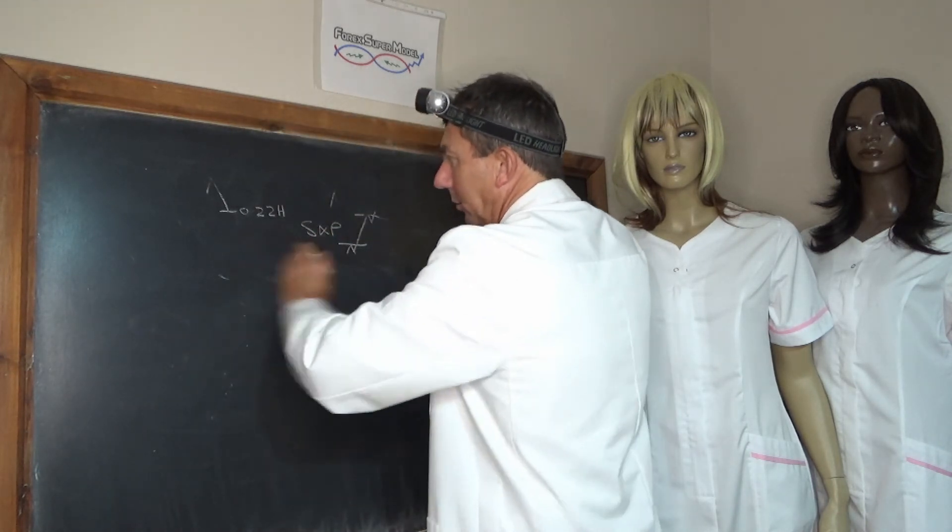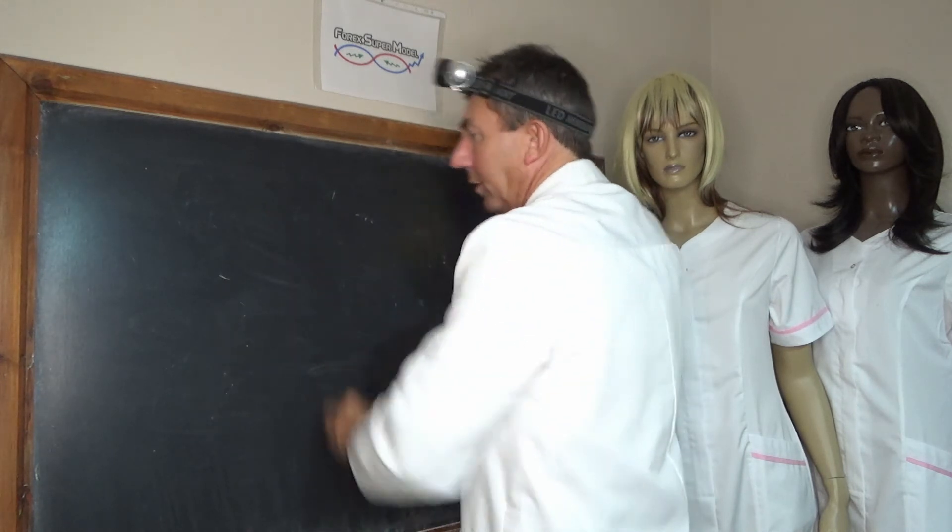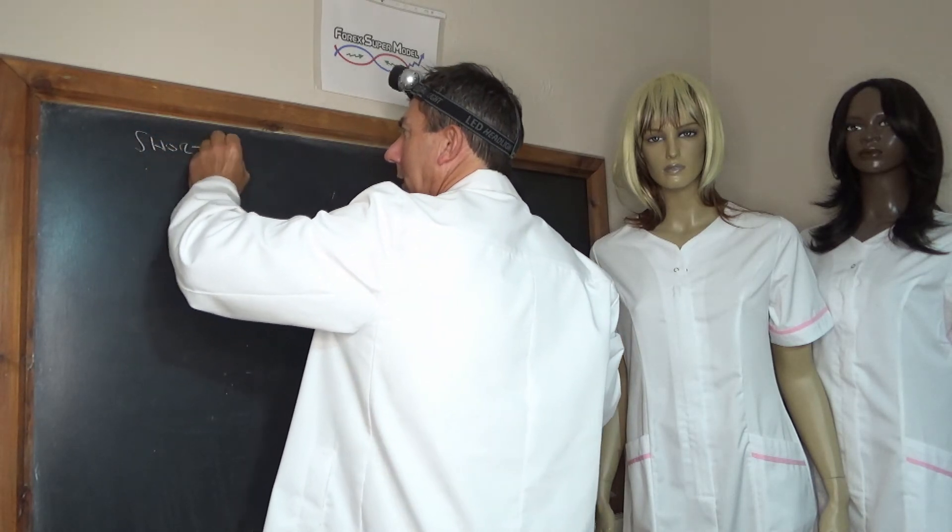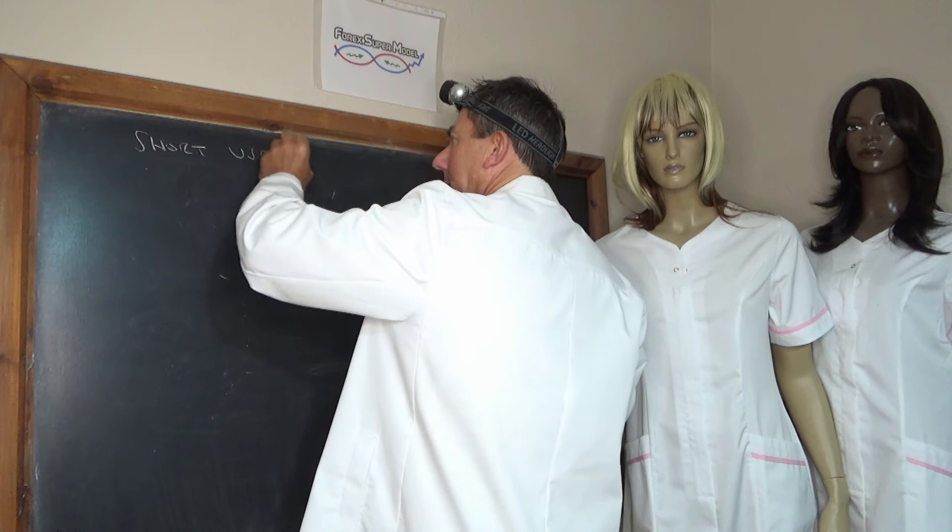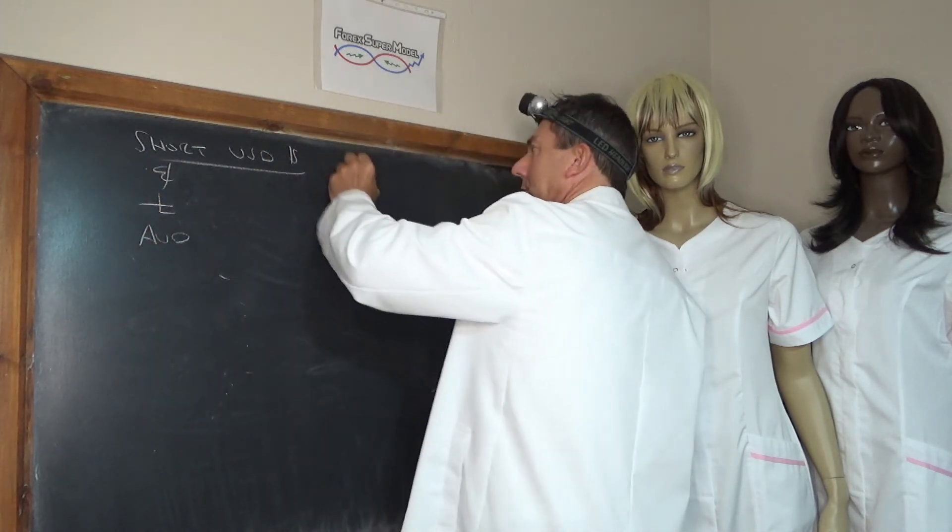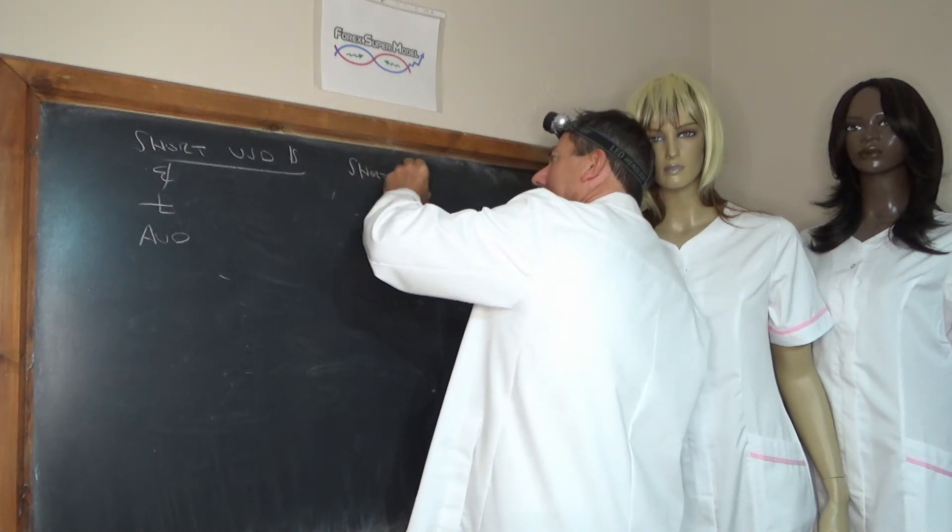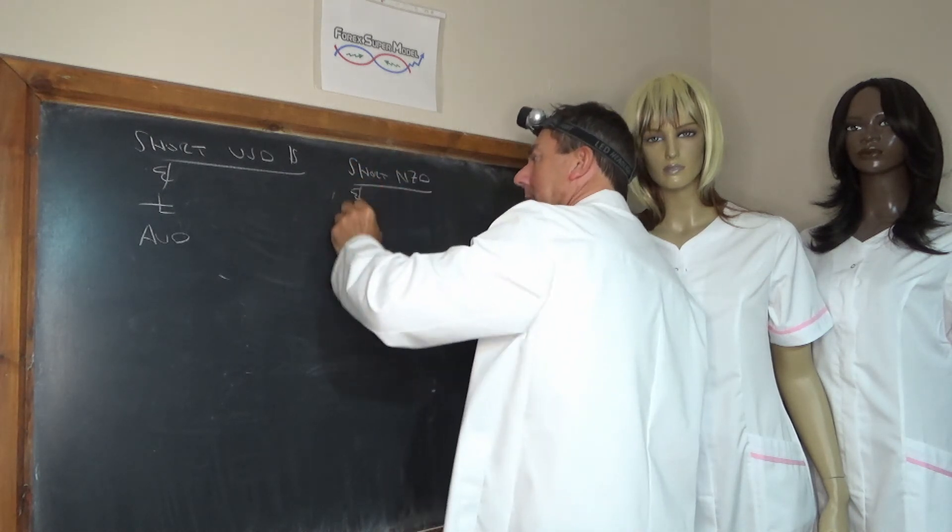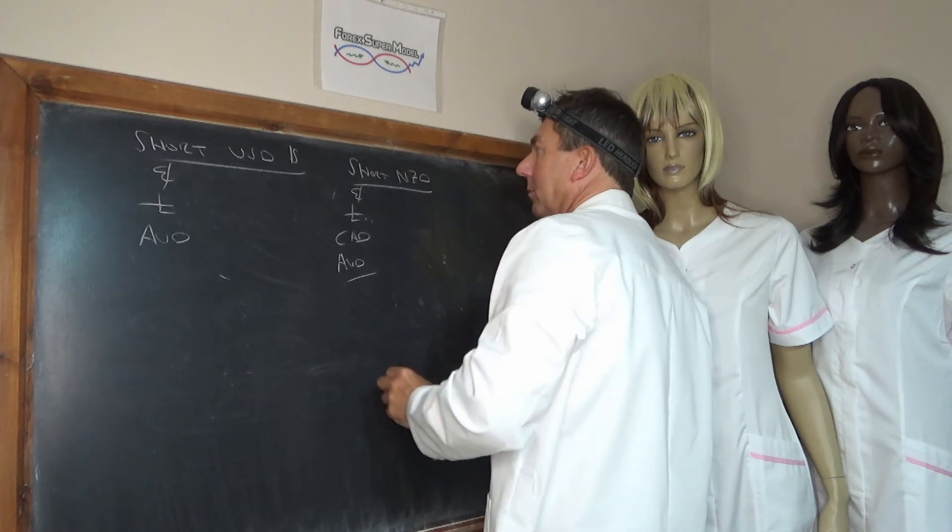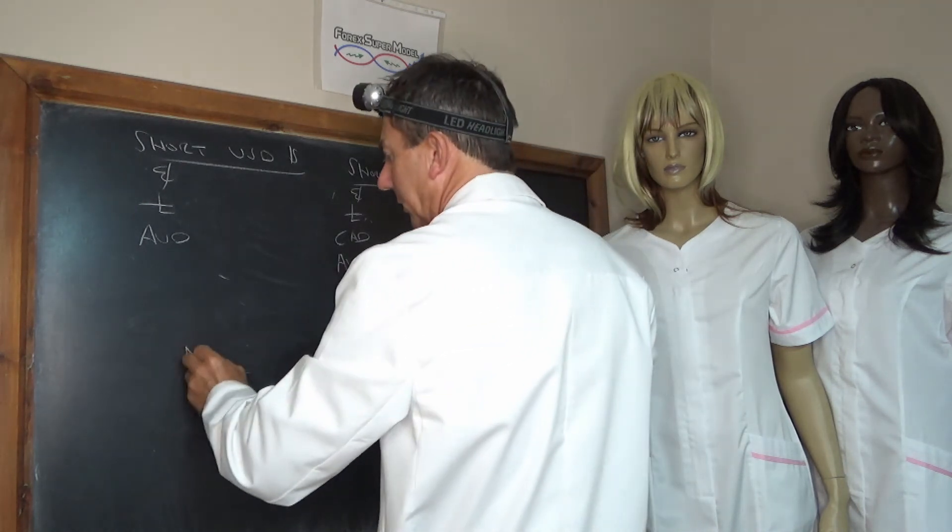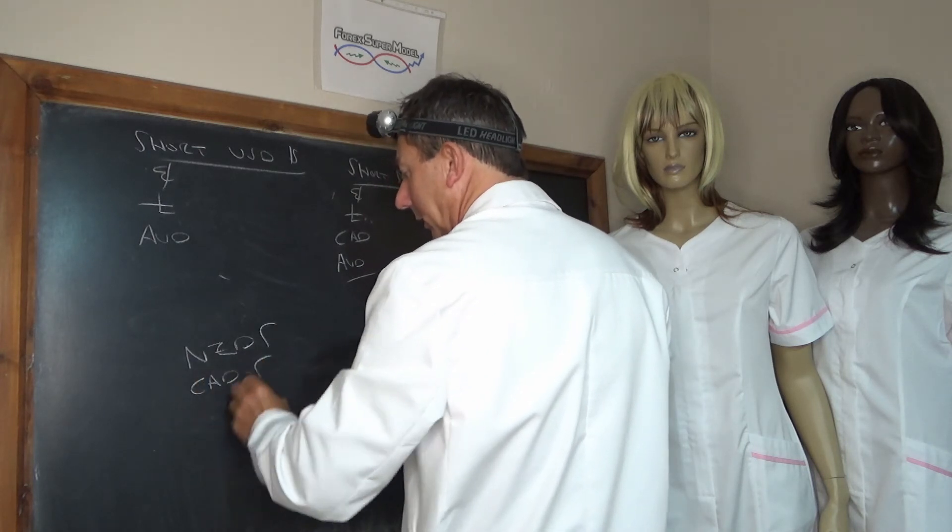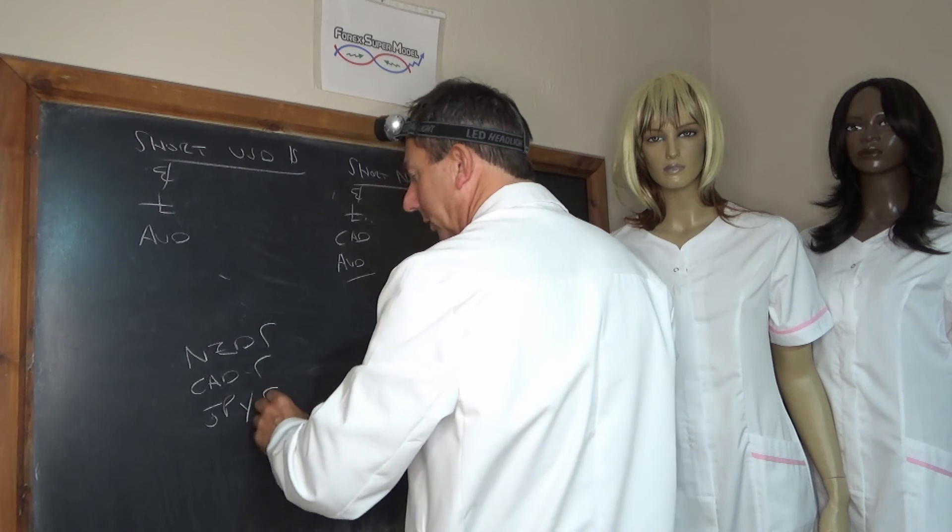So we'll have a look at this before we finish off. We're short USD, dollar against the Euro, the Pound, and the AD. And we're short NZD against Euro, Pound, CAD, and AD. Bear in mind that we've got NZD rate decision, CAD rate decision, and JPY rate decision next week.